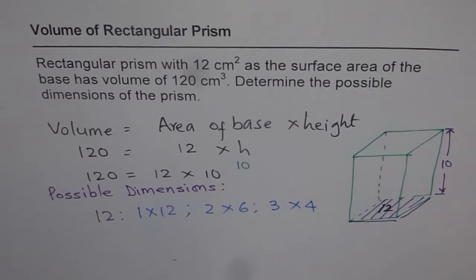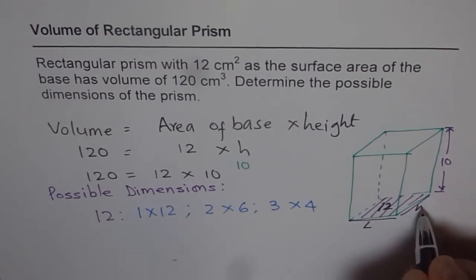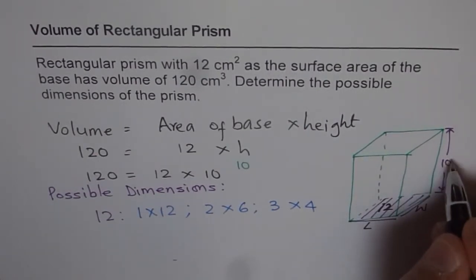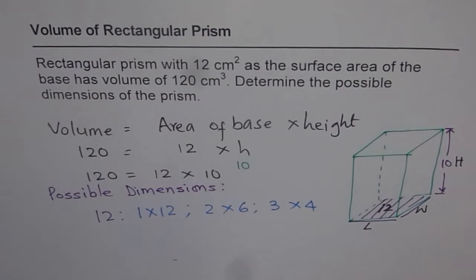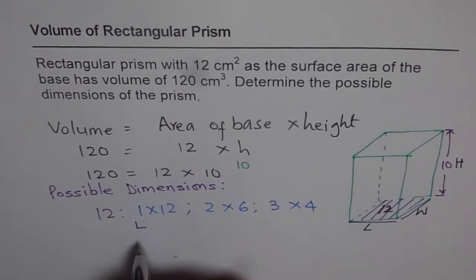For example, you can get 1 times 12 is 12. 2 times 6 is 12. How about 3 times 4? That is also 12. So these are the possible dimensions for the base itself. Do you realize that? Our height is fixed. In this particular equation, height has to be 10, but the base could be 1 times 12. That means we are talking about length and width now.